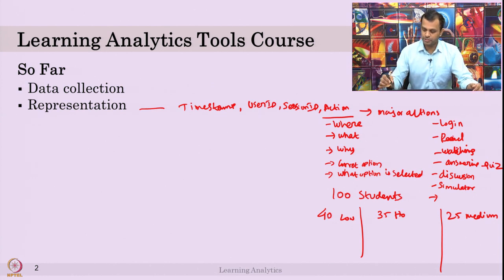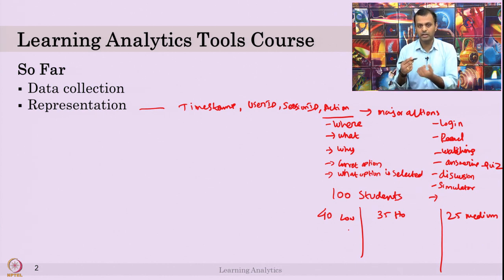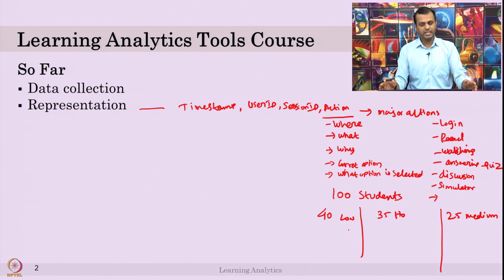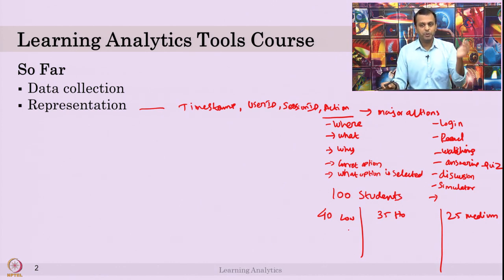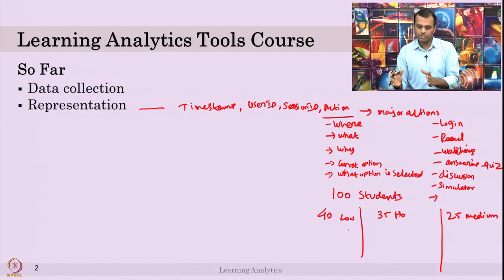First step after collecting features — login, read, watching — plot the graph and find out if there is any difference in frequency or average time spent. If there is a difference, talk about why, whether that difference can impact student performance — that is the hypothesis, test it out with the data using correlation or prediction. But if both groups' reading and watching times are similar with no significant difference, go further: maybe the difference lies in what and how they are reading. Then look into the contextual information.